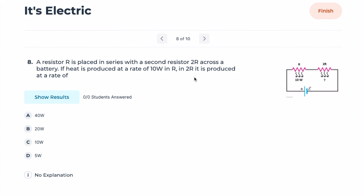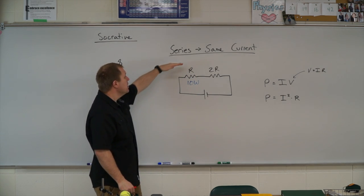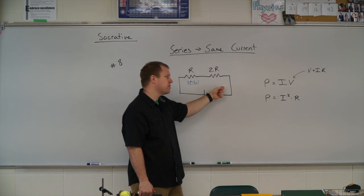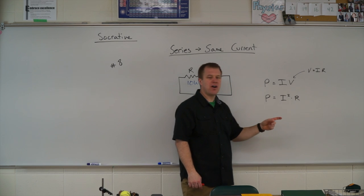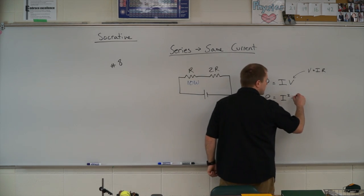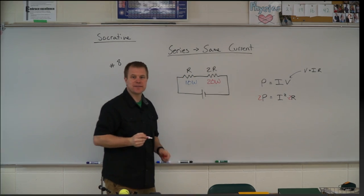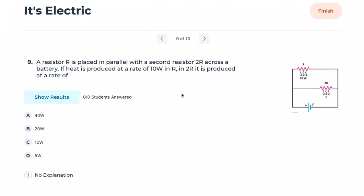Number eight: resistor R is placed in series with resistor 2R across a battery. Heat is produced at 10 watts in R — at what rate is it produced in 2R? In a series circuit, the current is the same through both. Using P = I²R, the resistor with twice the resistance has twice the power. So if R dissipates 10 watts, 2R dissipates 20 watts.